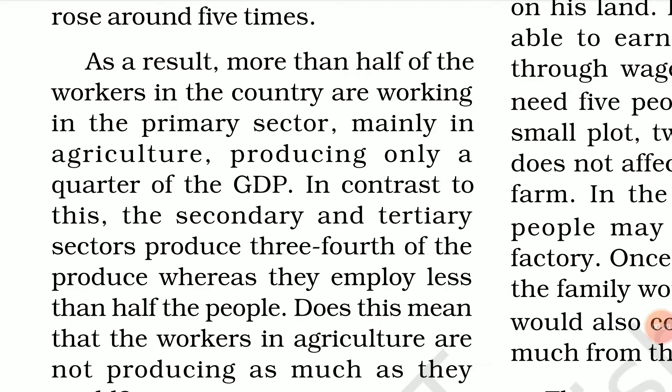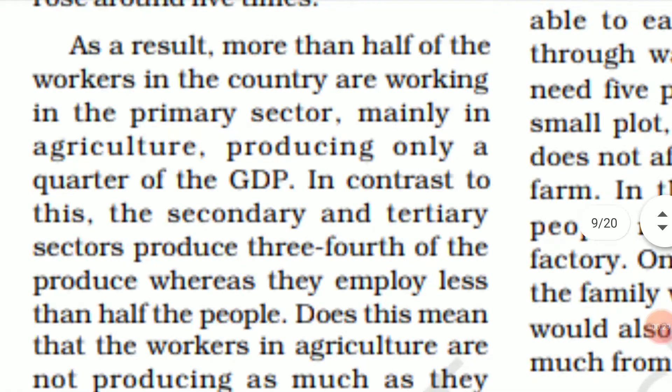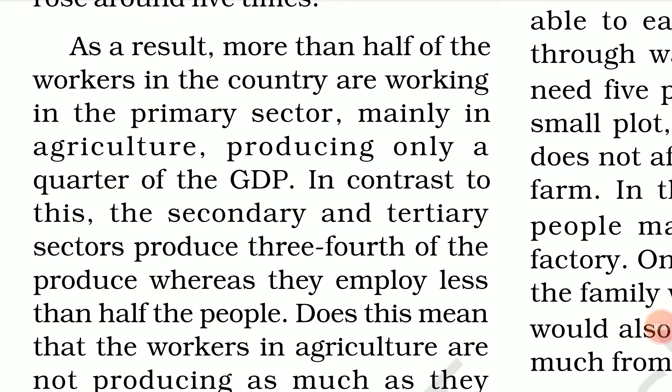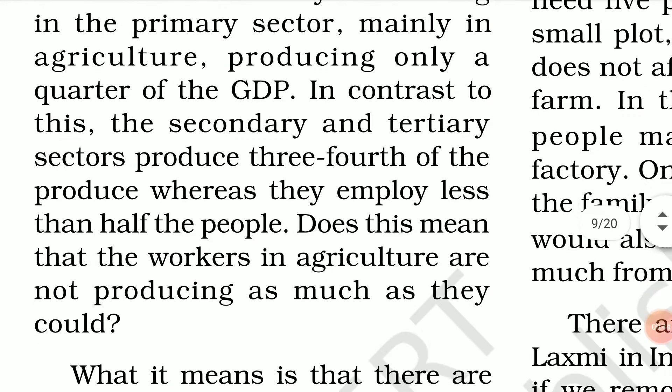So today we'll be reading about why more people are employed in the primary sector. More than half of the workers in the country are working in the primary sector, mainly in agriculture, producing only a quarter of the GDP. In contrast, the secondary and tertiary sectors produce three-fourths of the output, whereas they employ less than half the people. Does this mean that workers in agriculture are not producing as much as they could?